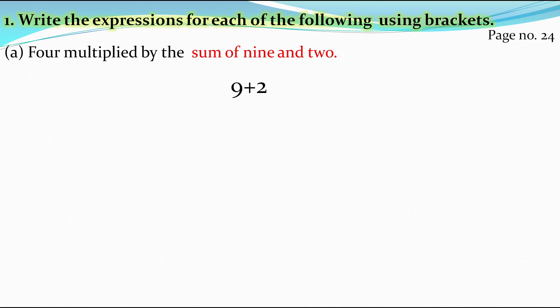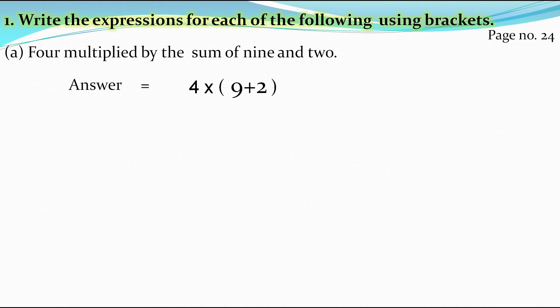As it is a separate expression, we will enclose it in the bracket. The remaining part is 4 multiplied by this. So we have to multiply by 4. The final answer of this question is 4 multiplied with the bracket enclosing 9 plus 2, that is 4(9+2).